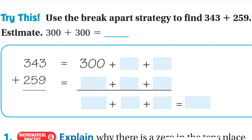Use the break apart strategy to find 343 plus 259. Estimate first: for 343, the digit to the right of hundreds is 4 — four is weak, so we keep it 300. For 259, the digit to the right is 5 — five is strong, so 200 becomes 300. So 300 plus 300 is 600.